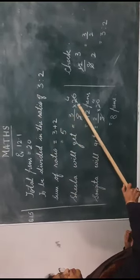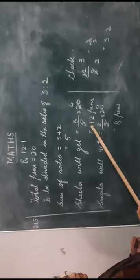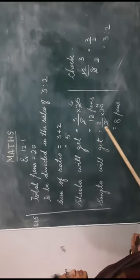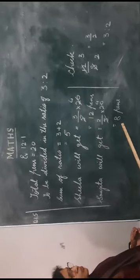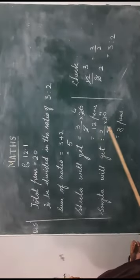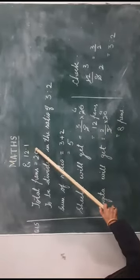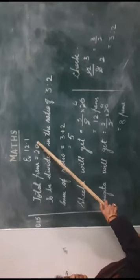So we will just do 3 upon 5 into 20 which equals 12 pence, and Sangeeta will get in the same way 8 pence. Then if we total these pence, 12 and 8, we get total 20 pence which has been divided.